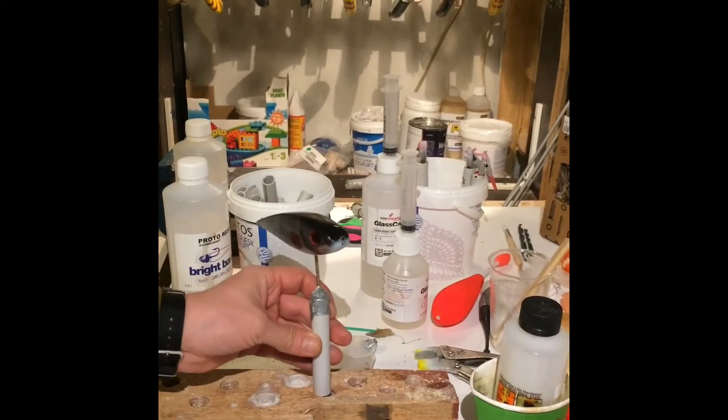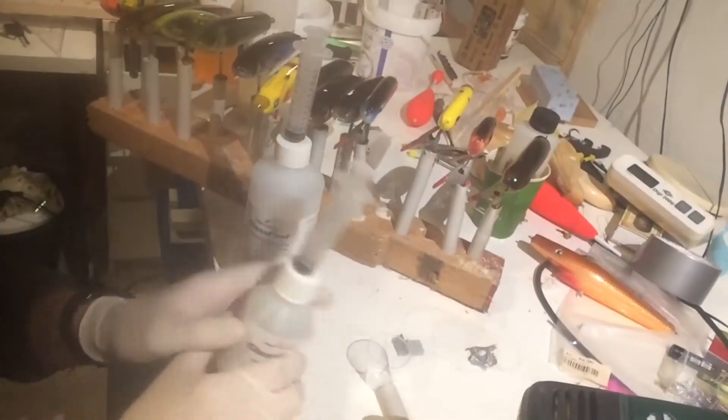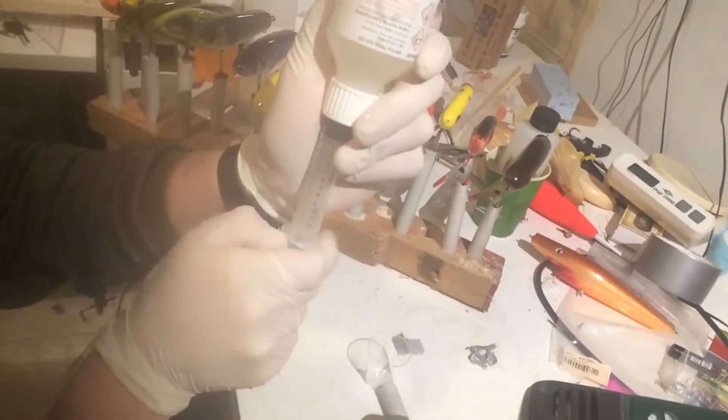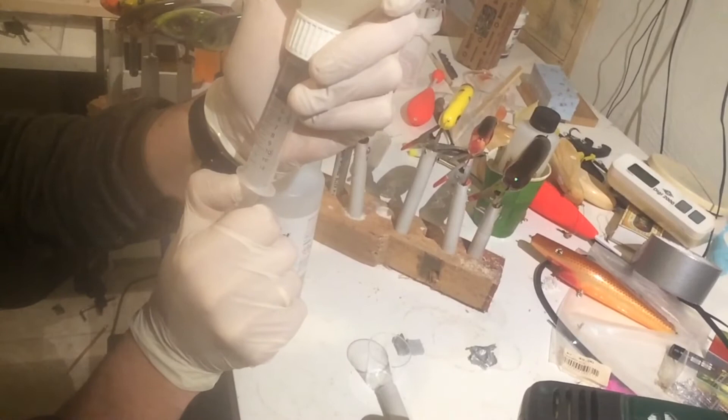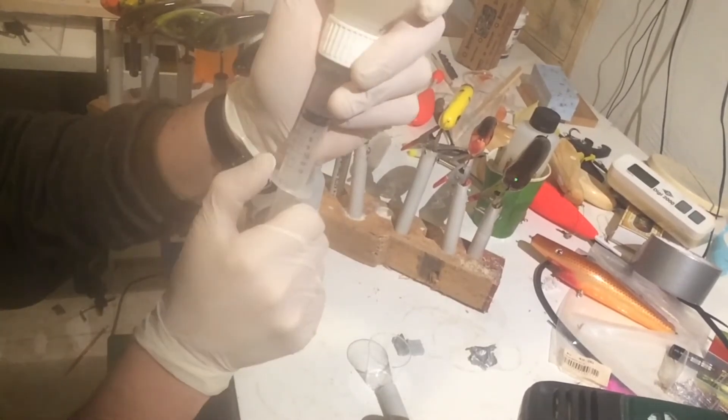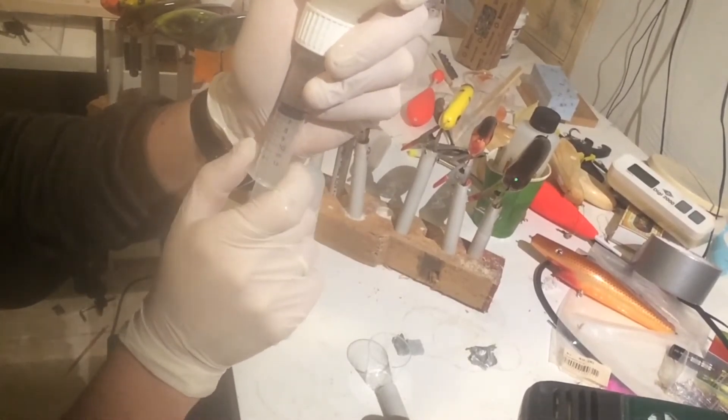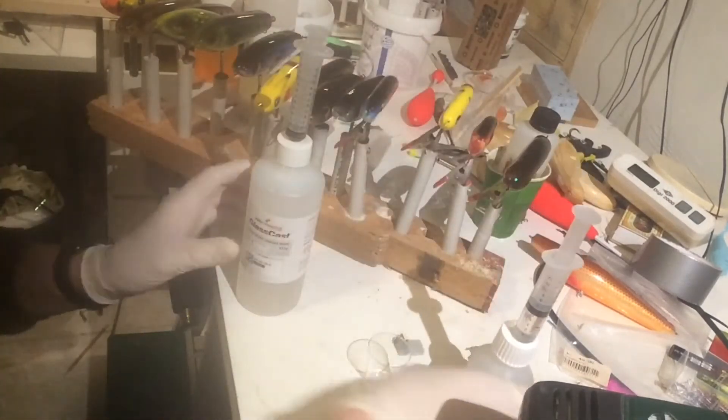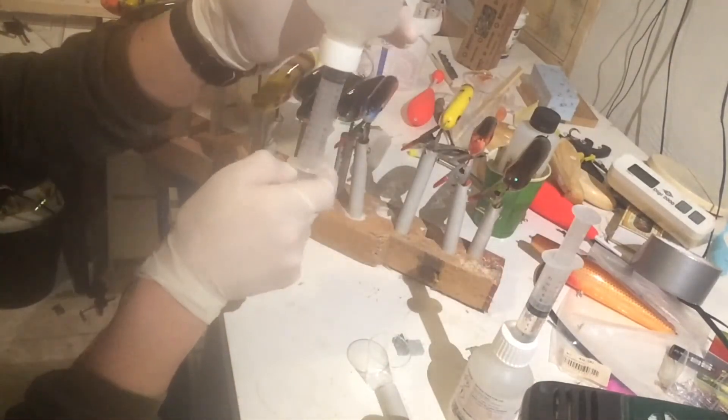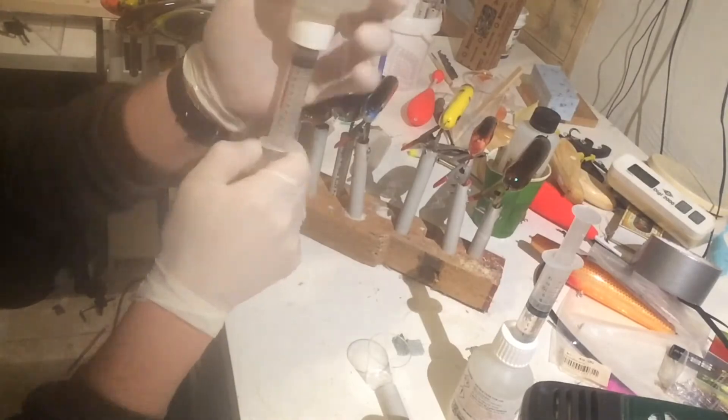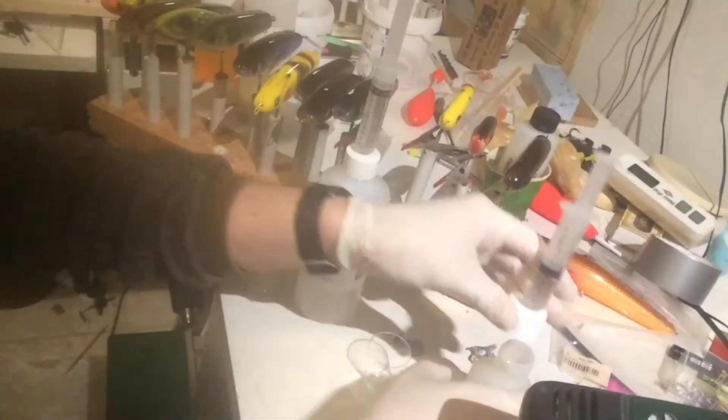The epoxy that I am using is called Glass Cast and it's a very good epoxy. I don't get any bubbles or fish eyes or anything. Of course I need to be sure that I mix it in the right amount and very precise amount. As you can see, I am using syringes that I have glued into the lid.